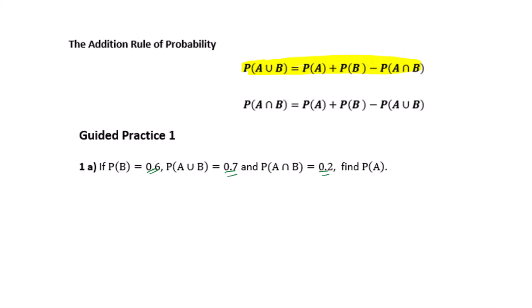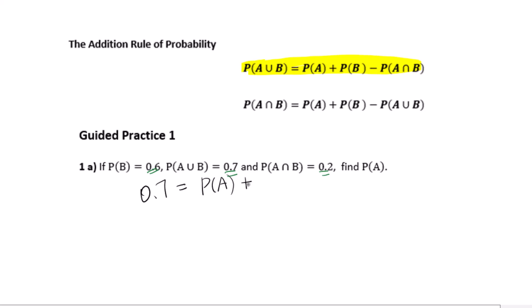P(A∪B) equals 0.7, P(A∪B) equals P(A) plus P(B) minus P(A∩B). Substituting: 0.7 equals P(A) plus 0.6 minus 0.2, so P(A) equals 0.3.